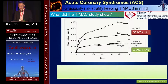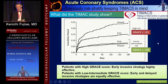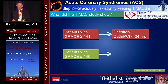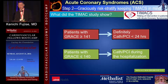What did the TIMACS study show? It showed that patients with a high GRACE score benefited greatly from early invasive strategy. For patients with a low to intermediate GRACE score, both early and delayed invasive strategies were equally effective. To summarize: if your patient has a GRACE score of 141 or greater, take the patient to the cath lab and perform PCI within 24 hours. If the GRACE score is 140 or less, you can wait and do cardiac catheterization during the hospitalization.